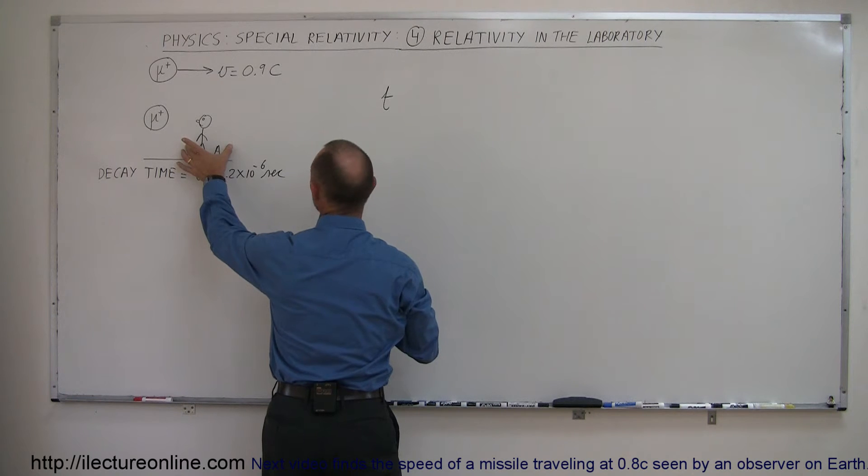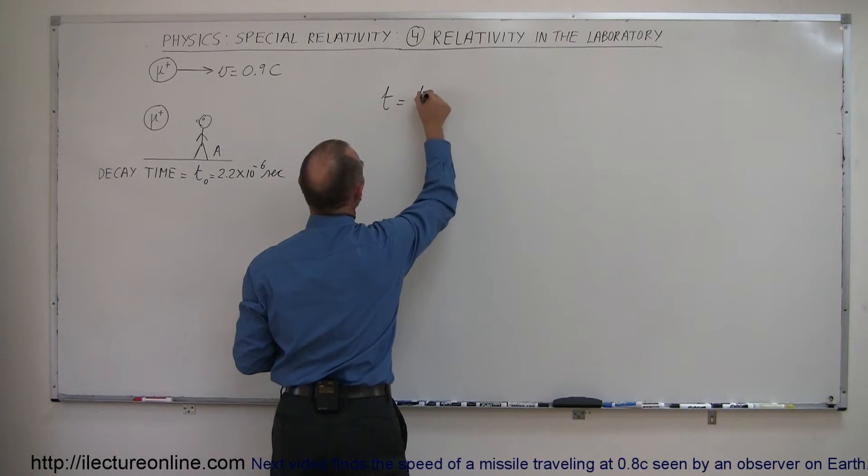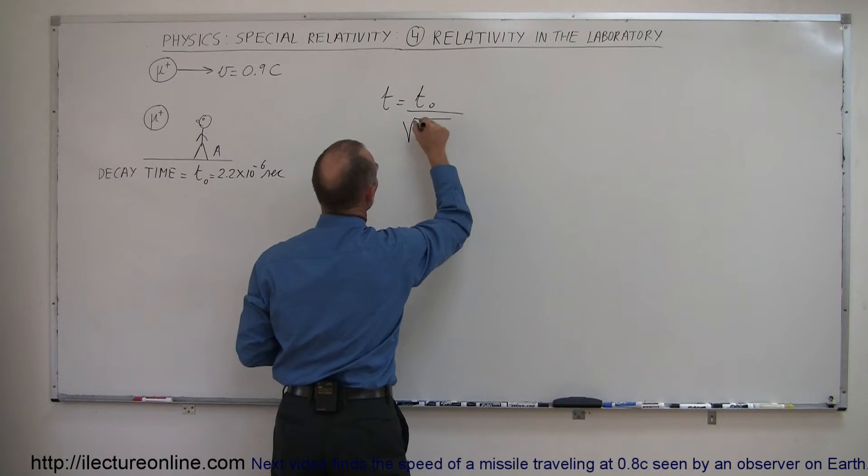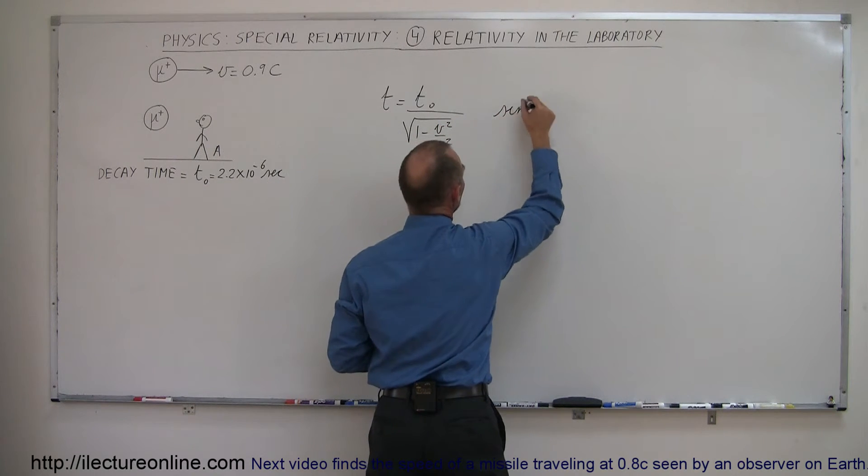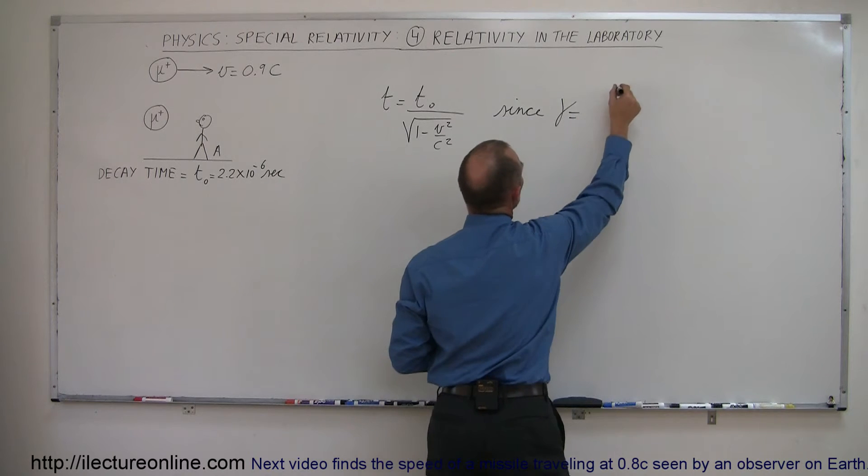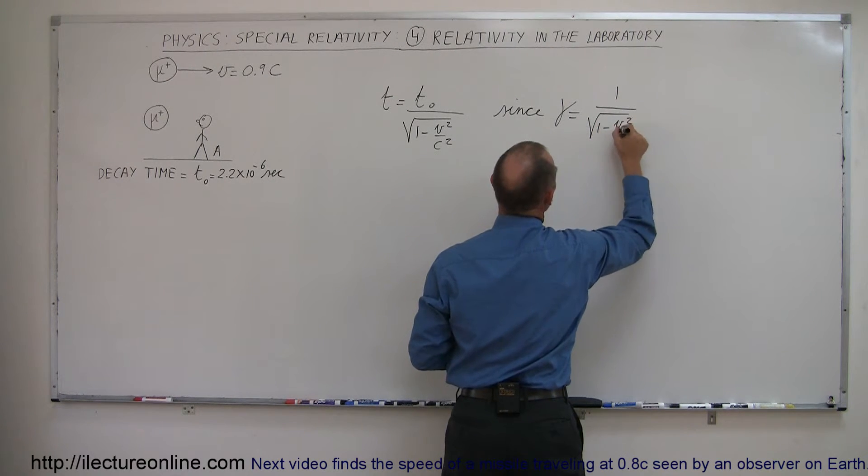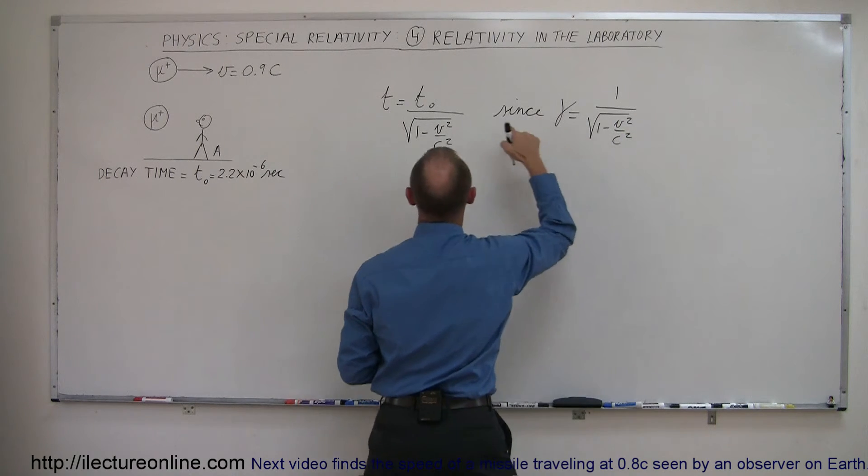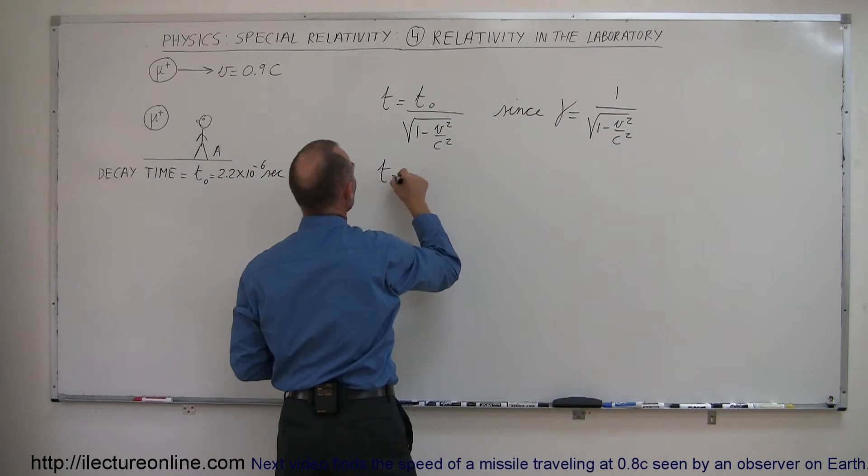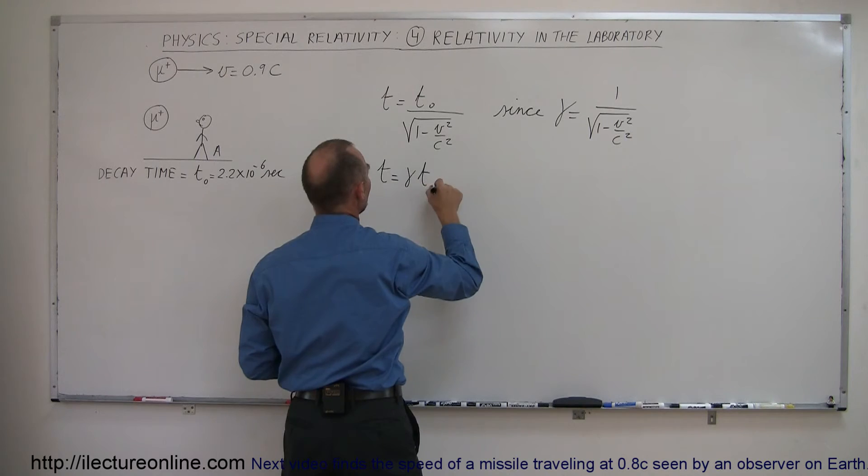So we use our time dilation equation. We can say that the time that this particle will exist as observed by the person in the laboratory is equal to t sub nought divided by the square root of 1 minus v squared over c squared. And of course since gamma can be said to be 1 over the square root of 1 minus v squared over c squared, if we figure out what gamma is, when we plug it in here we can write time equals gamma times t sub nought.